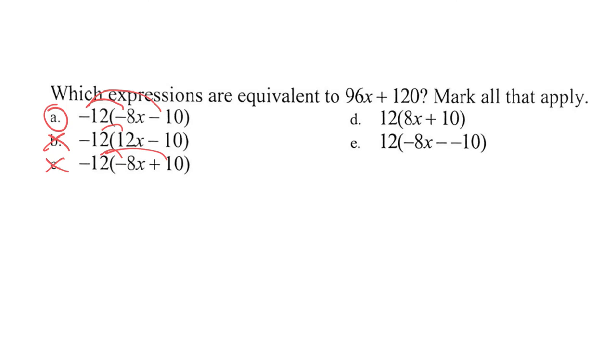Let's see what else we got. We got 12 times 8, that's 96. Check. 12 times 10, that's 120. Check. Boom, that's one of our answers. And this one is the same as 12 times negative 8x plus 10. So if we rewrite that, 12 times negative 8 is negative 96. So that's wrong. So I already know that that's not one of the answers. Both answers are A and D.